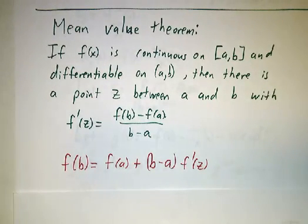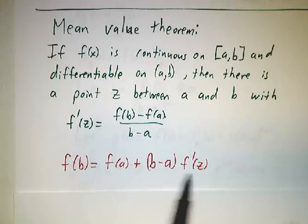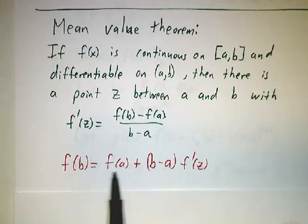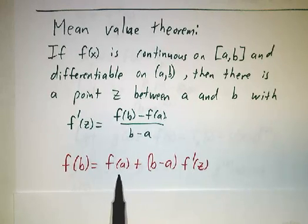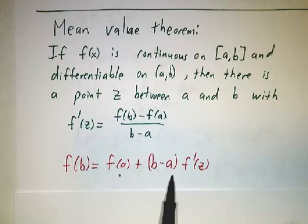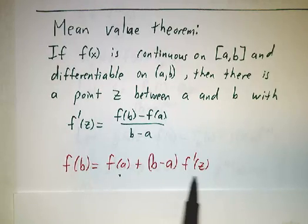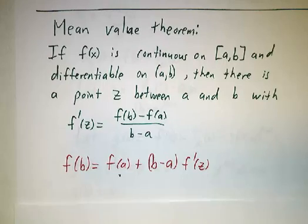that's another way of saying that f of b is f of a plus b minus a times f prime of z. In fact, this is Taylor's theorem in the zeroth order. It says this is the zeroth order Taylor polynomial. The remainder term is given by b minus a times the derivative at some point between a and b.